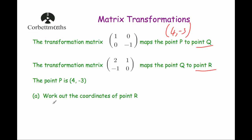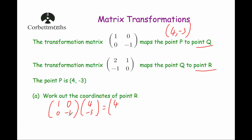Let's apply the first transformation. Taking matrix 1, 0, 0, minus 1 and multiplying by (4, −3): the first row times the column gives 1 times 4 plus 0 times minus 3, which is 4. The second row times the column gives 0 times 4 plus minus 1 times minus 3, which is 3. So point Q is (4, 3).